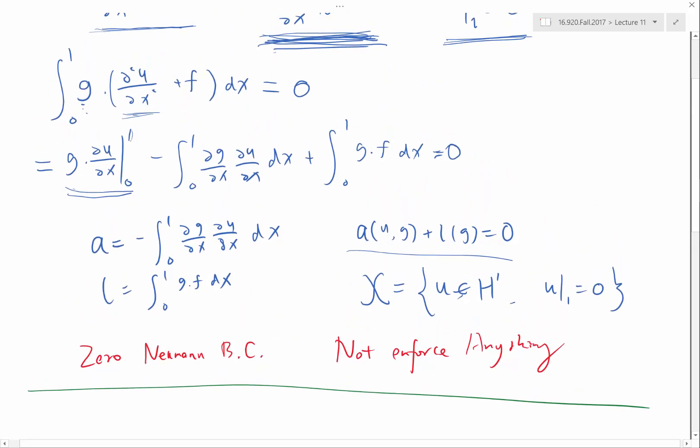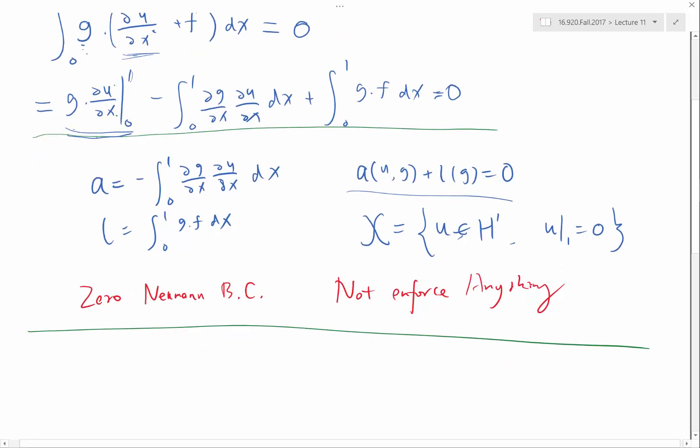Okay, so let's go back to where we derive this naturally satisfied Neumann boundary condition. We say that it is naturally satisfied because du/dx at x equal to 0 is exactly equal to 0, right? But what if